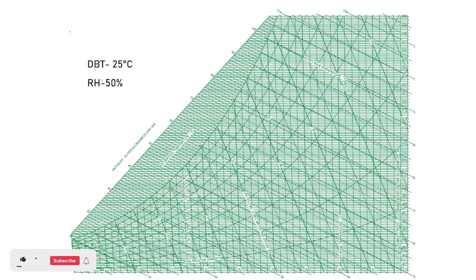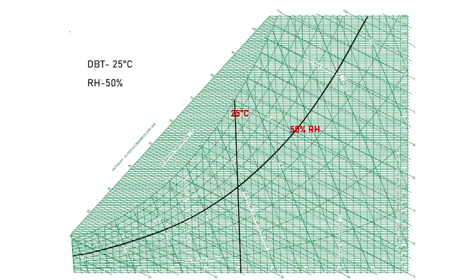If we know any two parameters of air, we can estimate all the other parameters on the psychrometric chart from those two. For example, suppose the air condition is a dry bulb temperature of 25°C and a relative humidity of 50%. The first step is to mark these two parameters on the chart and identify their intersecting point, which is our point of interest.